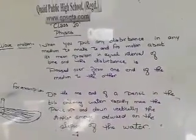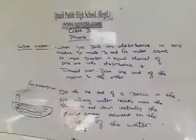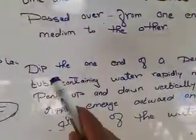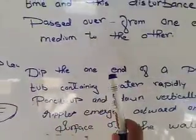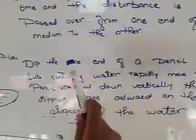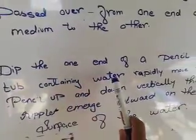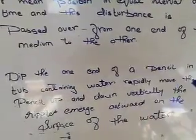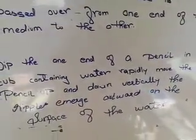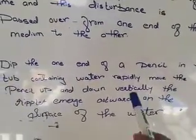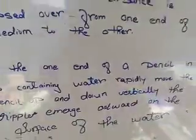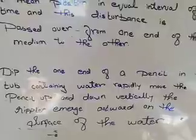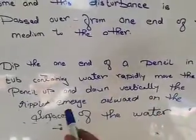So this position is known as, and this disturbance is known as wave motion. For example, dip one end of a pencil in the tub containing water. Ek tub pani ki tub mein agar kone pe uske pencil contain karen aur isko hilaye. Repeatedly move the pencil up, aap pencil ko up and down kare, usko hilaye up niche karen vertically. The ripples emits, aap dekhenge that it will be like bulbs and it will come on the surface of water to work on the surface of water.